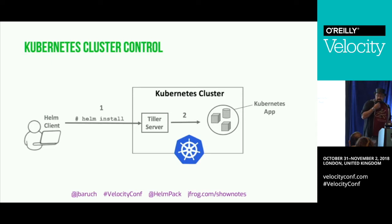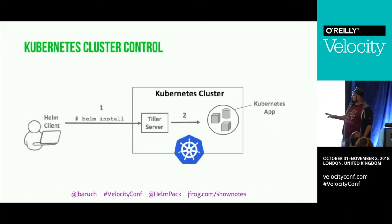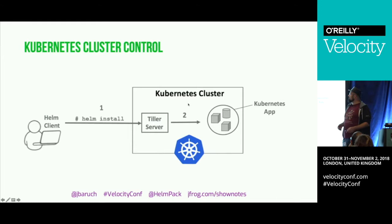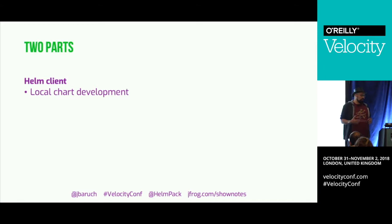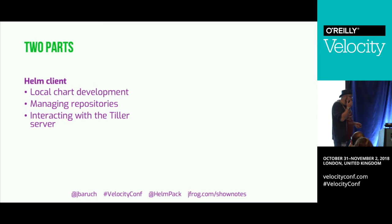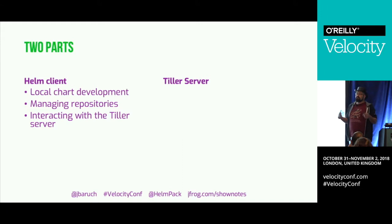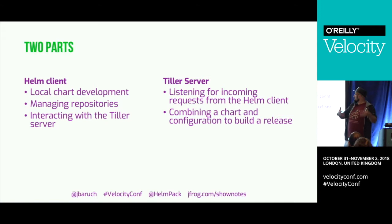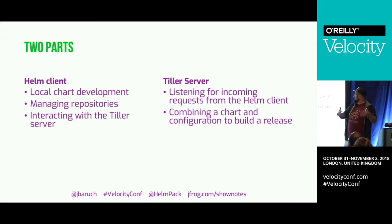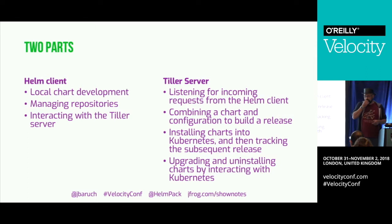This is how Helm 2 looks. It has two parts: the Helm client and what is called the Tiller server, which is a cluster controller that sits inside the Kubernetes cluster. The Helm client is responsible for local chart development, managing repositories, and interacting with the Tiller server. The server side listens for incoming commands and combines charts, values, and configuration into a release.